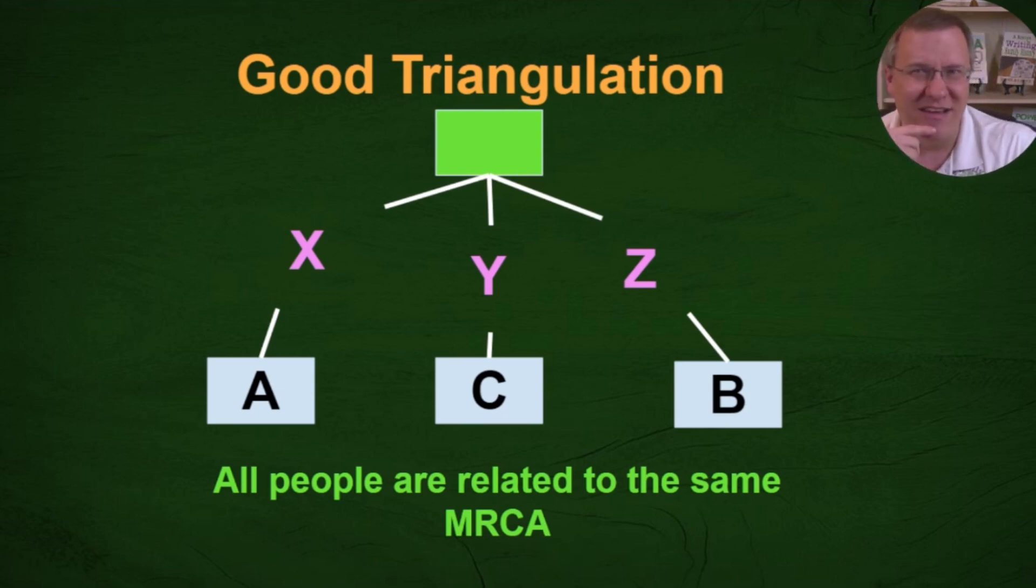And this X, Y, and Z here basically represents varying amounts of generations. So for instance this most recent common ancestor might be the third great grandparent of one. It might be the fourth great grandparent of the other and it might be the fifth great grandparent of the other person. But in any case they are all descended from this most recent common ancestor.